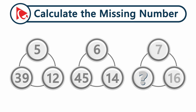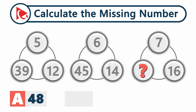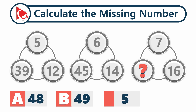The third shape only has two numbers, 7 and 16. You need to calculate the third missing number and select the answer out of four possible choices. Choice A: 48. Choice B: 49. Choice C: 51. And last but not least, choice D: 52.